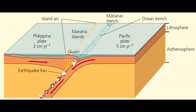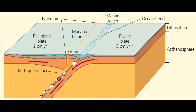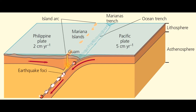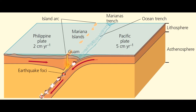The melted material rises up through any lines of weakness towards the surface. Extrusive volcanic activity results in the formation of a chain of volcanic islands above the subduction zone, known as an island arc.